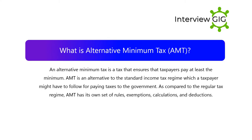What is Alternative Minimum Tax (AMT)? Alternative Minimum Tax is a tax that ensures that taxpayers pay at least the minimum. AMT is an alternative to the standard income tax regime which a taxpayer might have to follow for paying taxes to the government. Compared to the regular tax regime, AMT has its own set of rules, exemptions, calculations, and deductions.